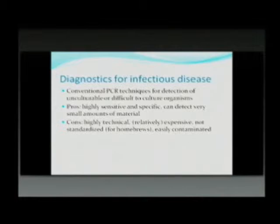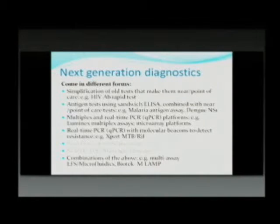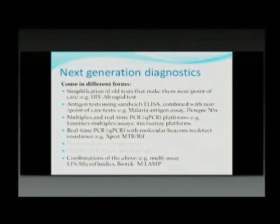There are a lot of next-generation diagnostics, and we will focus on about five of them. These include simplification of antibody tests — such as the HIV antibody rapid test, which is now point-of-care — and antigen tests like sandwich ELISAs now used for malaria and dengue. Also included are multiplex real-time PCR, quantitative PCR platforms such as Luminex multiplex assays and microbead platforms, and GeneXpert, which is a real-time PCR with molecular beacons to detect resistance.